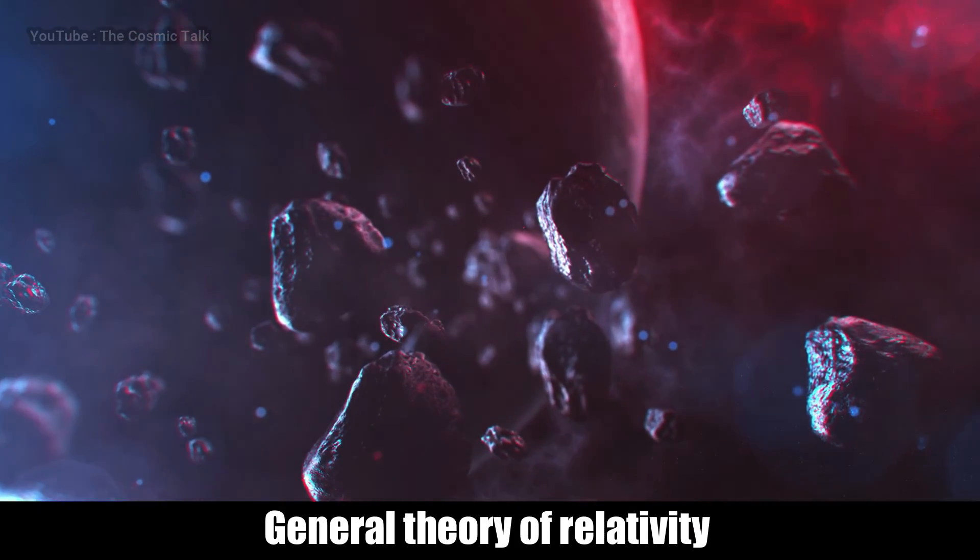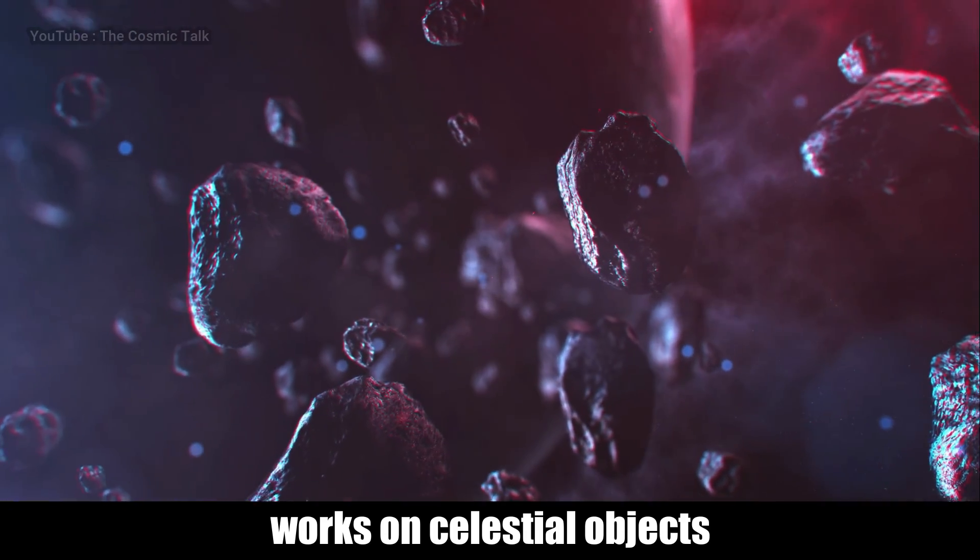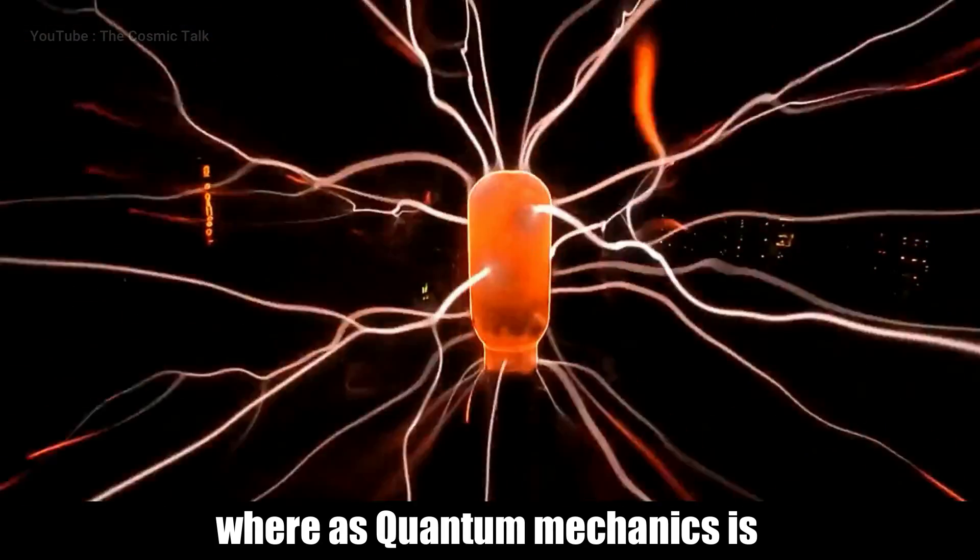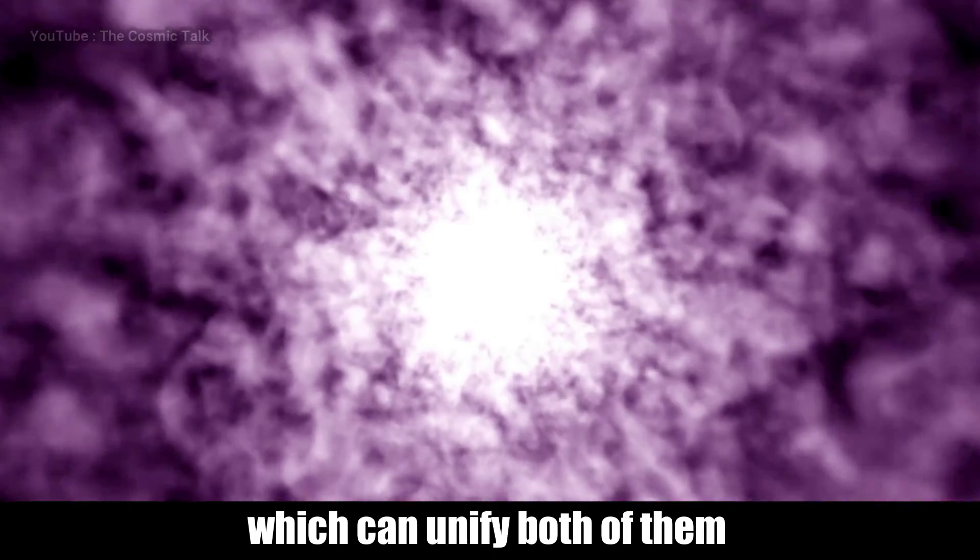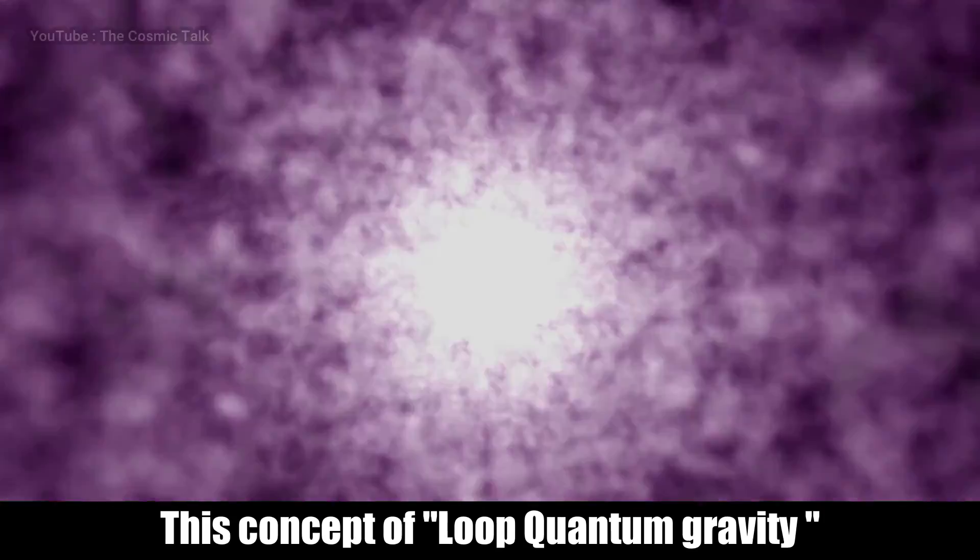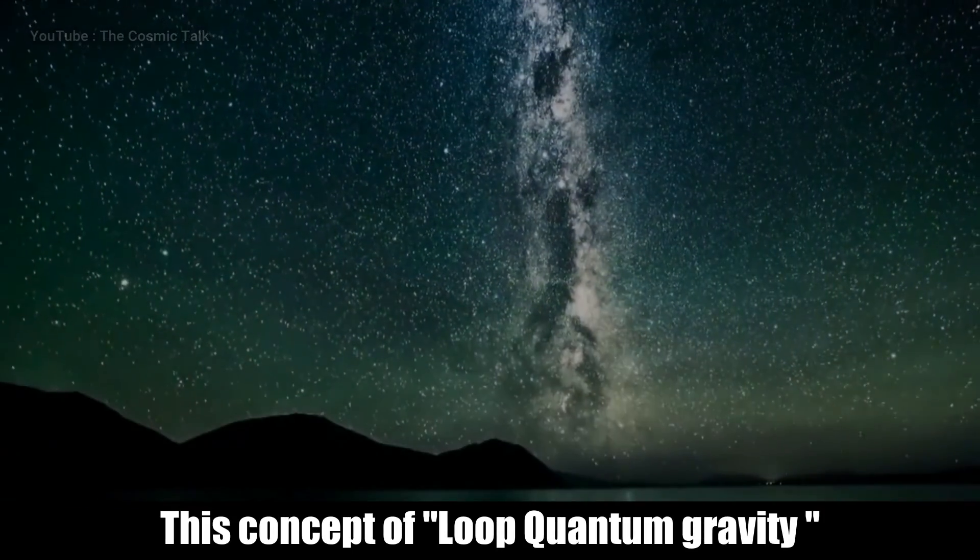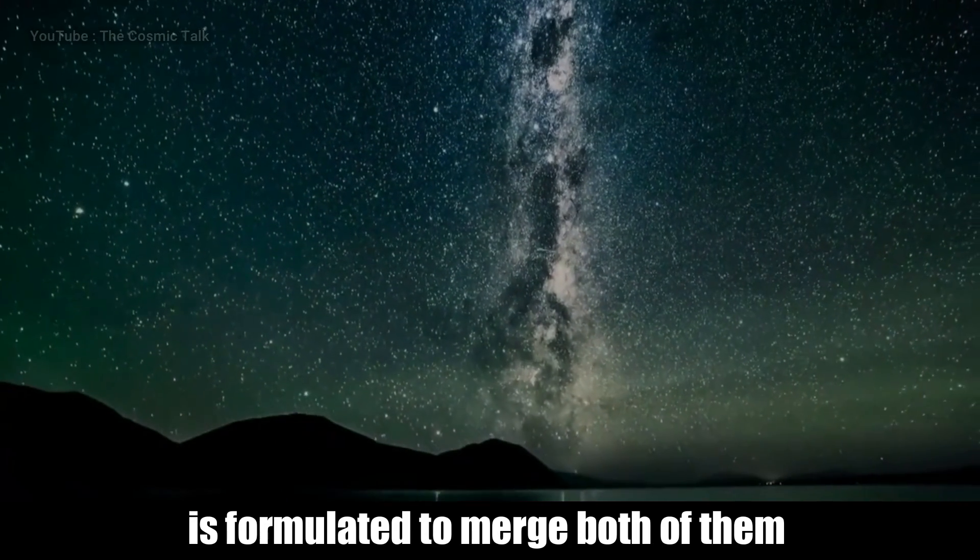General theory of relativity works on celestial objects, whereas quantum mechanics is study of the atomic world. Scientists were working on theories which can unify both of them. This concept of Loop Quantum Gravity is formulated to merge both of them.